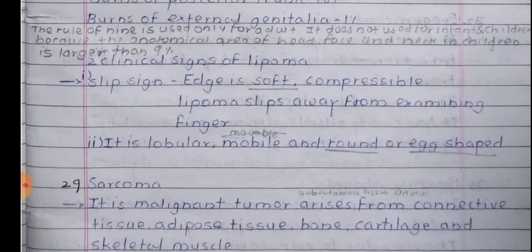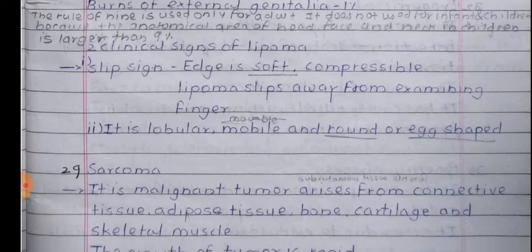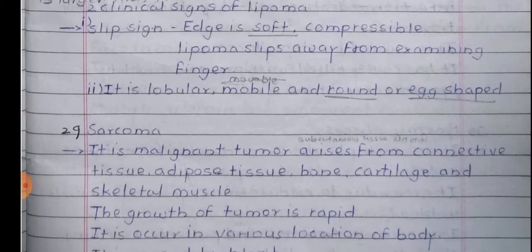Clinical signs of lipoma — slip sign: The edge is soft and compressible; the lipoma slips away from the examining finger. It is also lobular, mobile, and round or X-shaped.